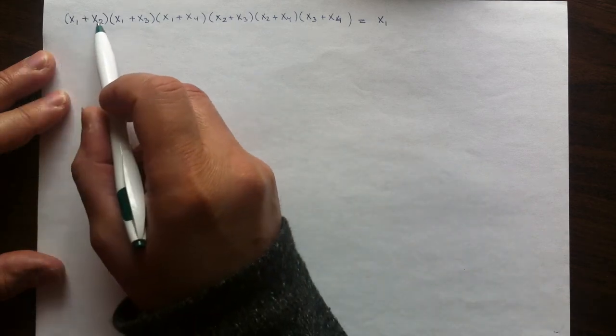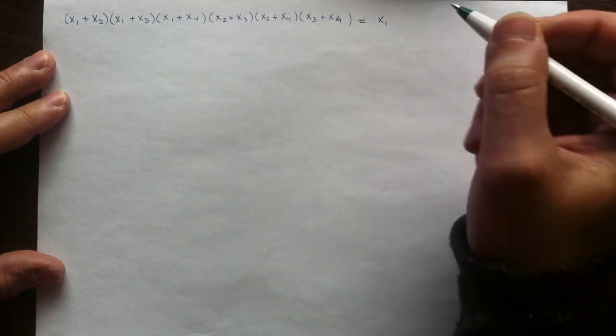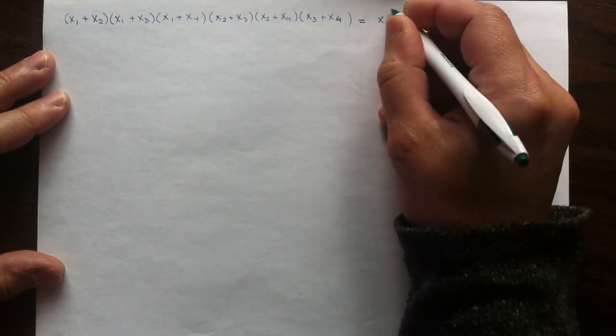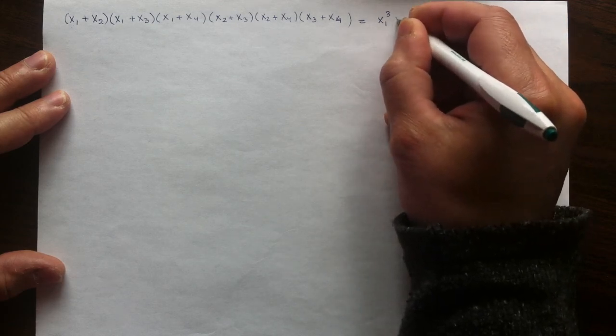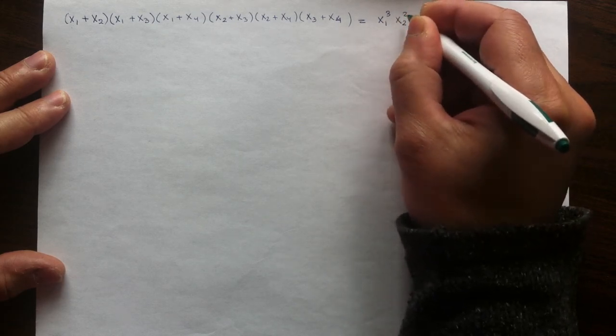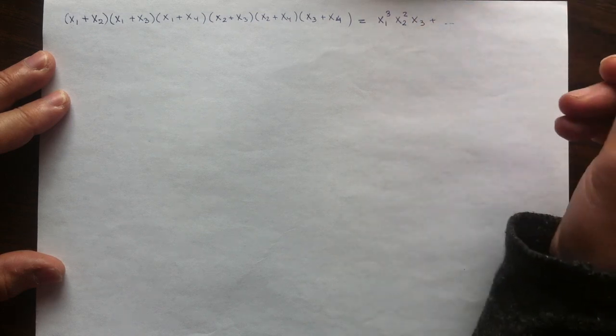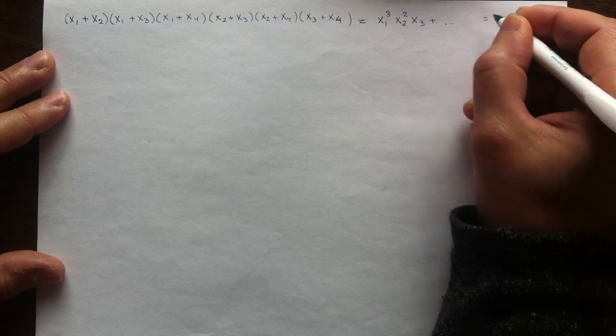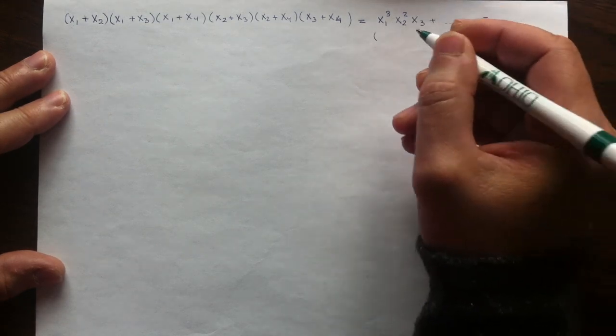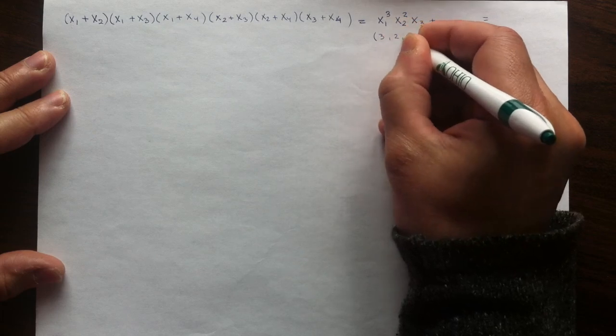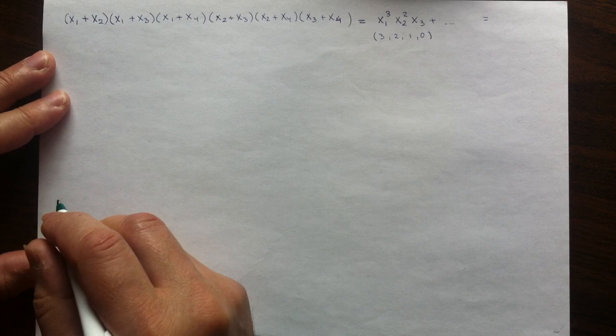So the highest in this is x1, x1 again, x1 again, x2, x2, x3. So altogether I'll have three copies of x1, so x1 cubed, then I'll have two copies of x2, x2 squared, and I'll have one of x3. And that is the highest and whatever is after is less than that. So the degree vector of this monomial is 3 and 2 and 1 and 0, because we have four coordinates, we have four variables.